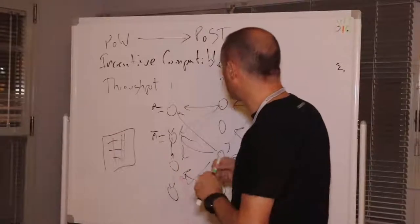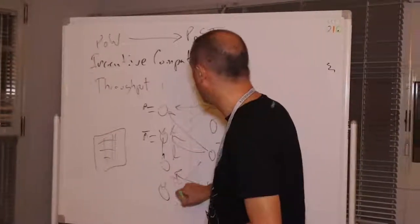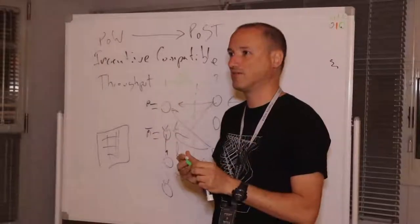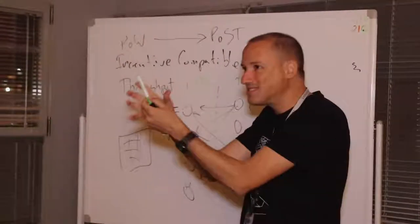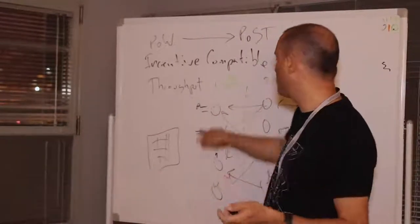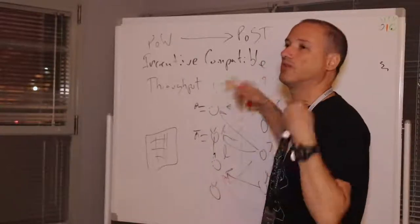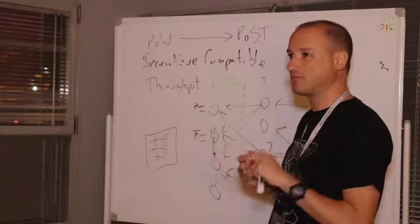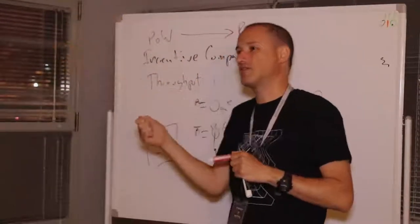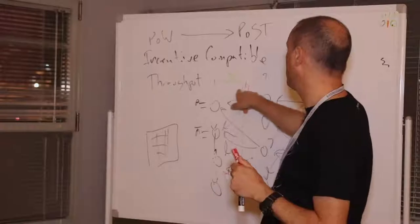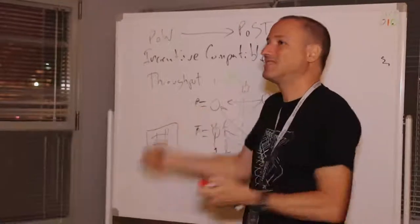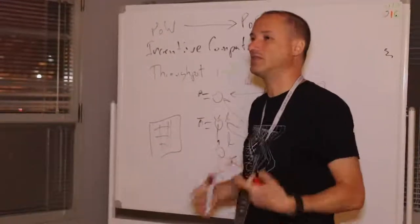If we put a 30-second threshold — anything received after 30 seconds is invalid — honest blocks would always be sent on time and we'd agree they're valid. But a malicious actor can always send their block right on the threshold, so some honest parties think it arrived early and some think it arrived late. We'd have disagreement. So we cannot use timing information to resolve this, and we have to solve the disagreement some other way.